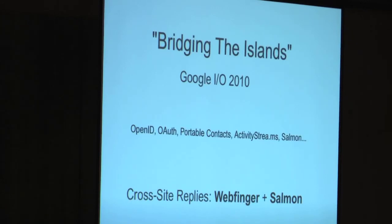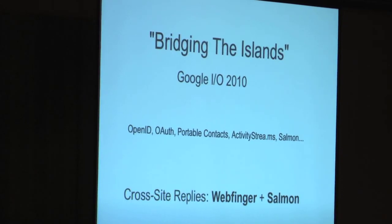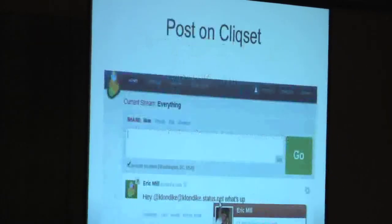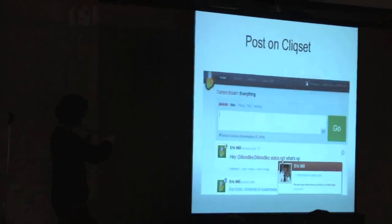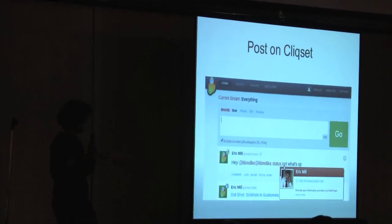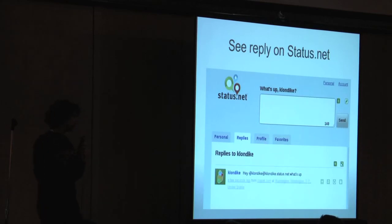There was a great talk at Google I/O called Bridging the Islands, where people talked about the whole stack of social web protocols coming up. They did a great demo using WebFinger and Salmon. This is Clickset — it's an aggregator like Google Buzz that you can also post on. I posted an at-reply using a fully qualified email-like name, and it looked up that name on another service, status.net, using WebFinger. You can log in on status.net and see that reply I posted on Clickset. We've just done cross-site mentions using WebFinger for discovery and Salmon for the actual transport of data between them.